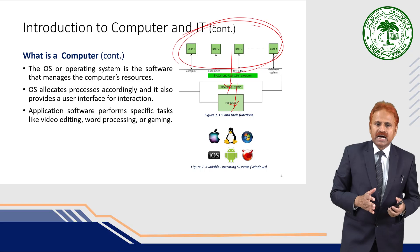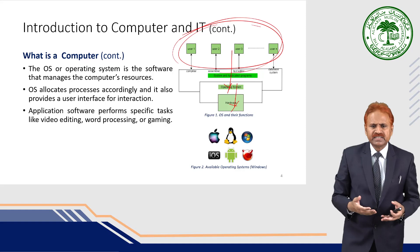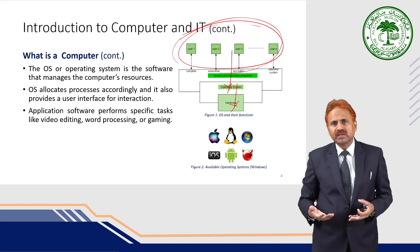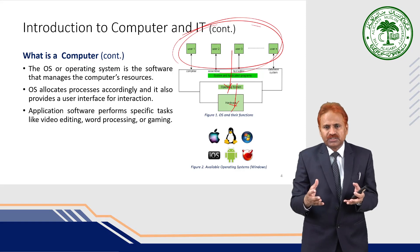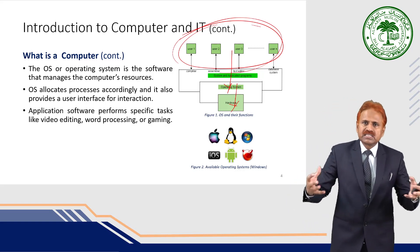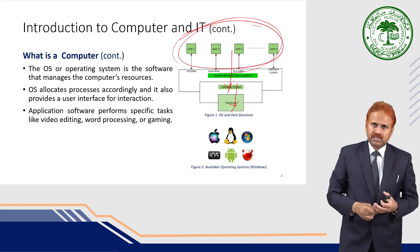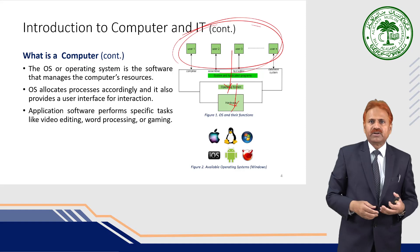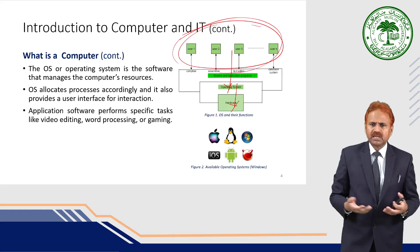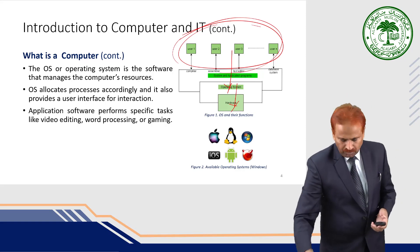Application softwares are a special kind of software that performs specific tasks like video editing, word processing, and gaming. System softwares allow you to make optimal use of the system and interact with the hardware directly — like assemblers, operating systems, etc. These are known as system softwares.